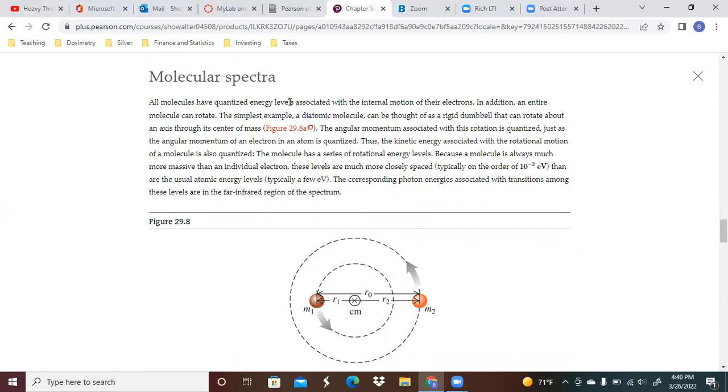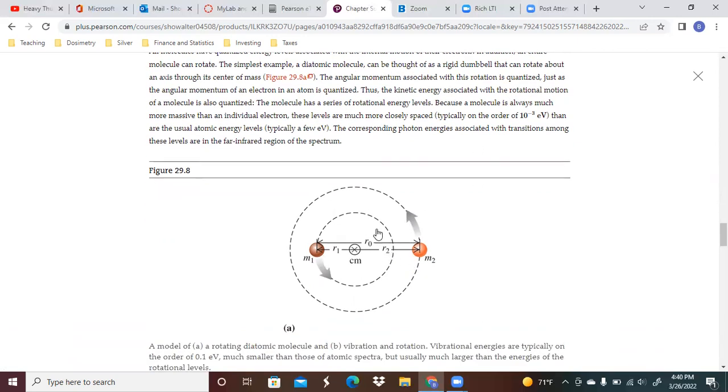All molecules have quantized energy levels associated with the internal motion of their electrons. In addition, an entire molecule can rotate. The simplest example, a diatomic molecule, can be thought of as a rigid dumbbell that can rotate around the axis through its center of mass.